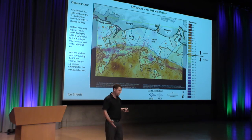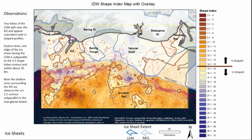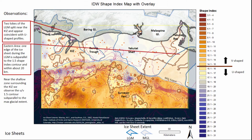With respect to the ice sheets — which I think is one of the most interesting results — I'm showing the last glacial maximum and the maximum glacial extent overlaid on our shape index map. What we see is that two lobes of the last glacial maximum seem to split near the Kayak Island Zone, and those match up pretty well with U-shaped profiles. In the eastern area, one edge of the ice sheet during the last glacial max is subparallel to the 1.5 shape index contour — the boundary between U-shaped and V-shaped profiles. Near the shallow zone surrounding Kayak Island, we see the U and V contour subparallel to the maximum glacial extent.